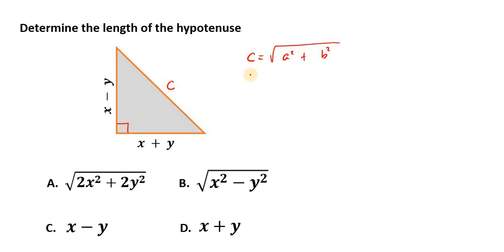In finding this hypotenuse, in this case C, we're going to take A as X plus Y and square that quantity. Take B as X minus Y and square that quantity.